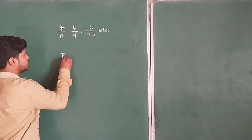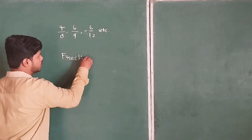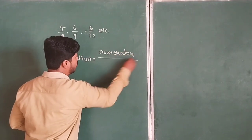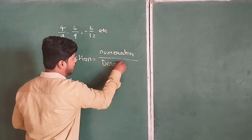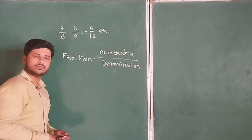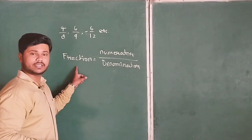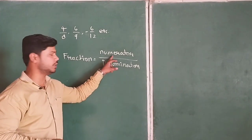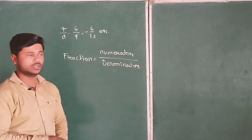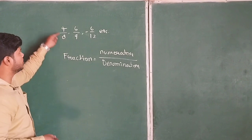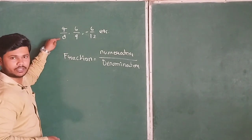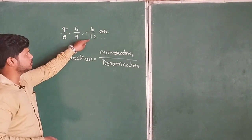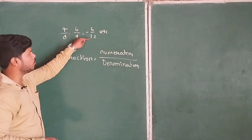A fraction is always written as numerator upon denominator. The upper number is called the numerator and the lower number is called the denominator. So in 4/8, numerator is 4 and denominator is 8. In 6/9, numerator is 6 and denominator is 9. Here, numerator is -6 and denominator is 12.